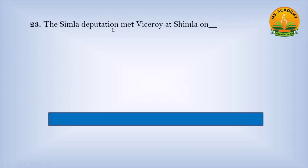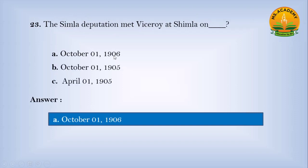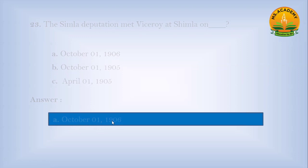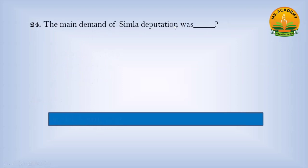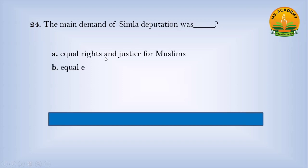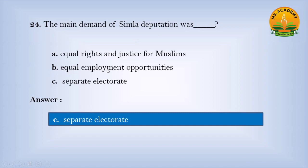The Shimla Deputation met the Viceroy at Shimla on: Option A, October 1st, 1906; Option B, October 1st, 1905; Option C, April 1st, 1905. Answer: A — October 1st, 1906. The main demand of the Shimla Deputation was: Option A, equal rights and justice for Muslims; Option B, equal employment opportunities; Option C, separate electorates. Answer: C — separate electorates.